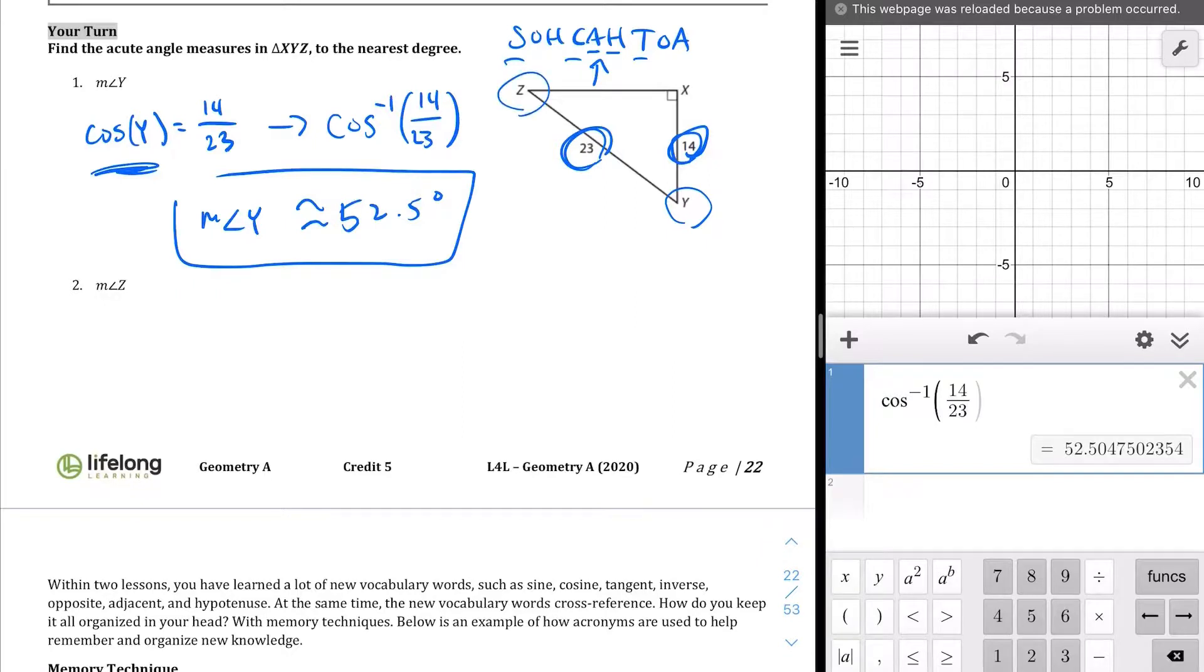And then here's the measure of angle Z. We're looking for Z. Let me actually erase some of this here, just so we have a clean slate. And in the case of Z, we're dealing with the opposite over the hypotenuse. So, we're going to take the sine, right? In this case, the inverse sine.